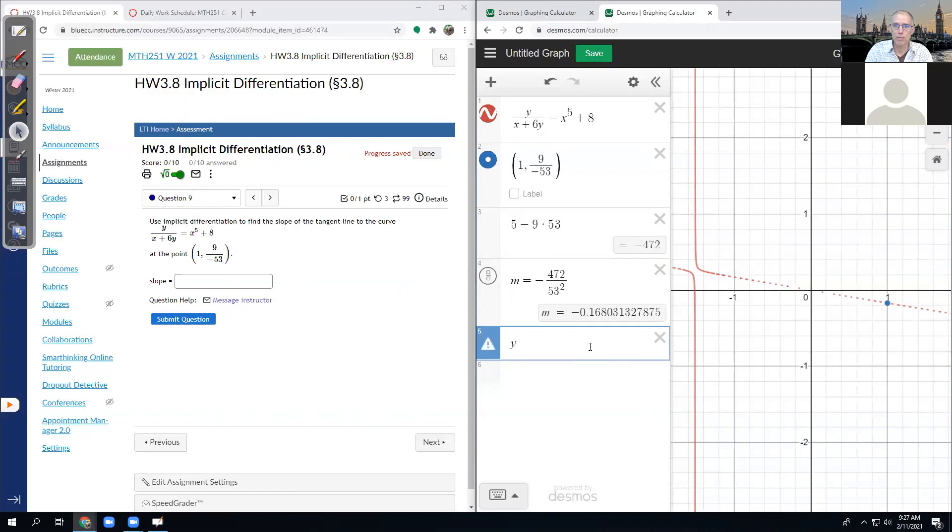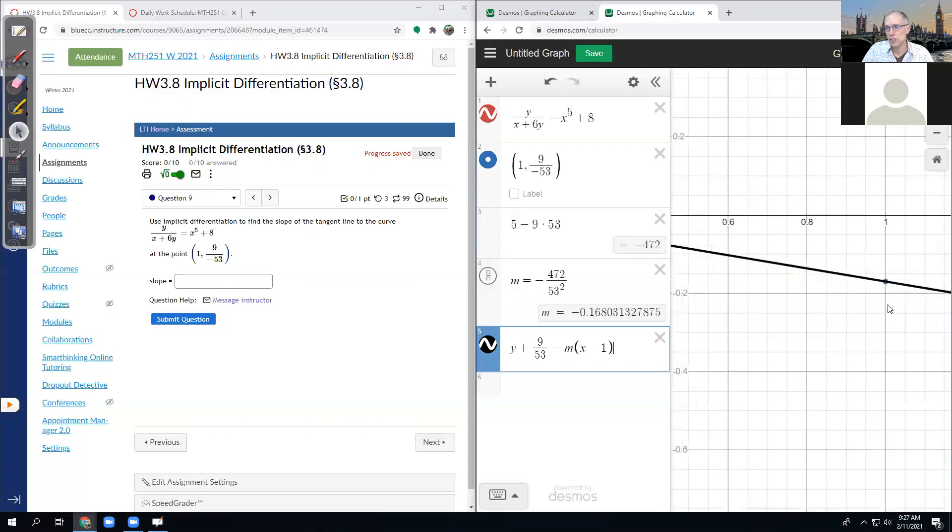So y minus y1, so that'd be plus 9 over 53. And I hope you guys are doing this tangent line check on your own when you're doing your homework. Otherwise, the test is going to be very painful.